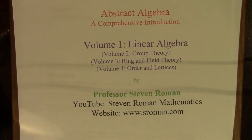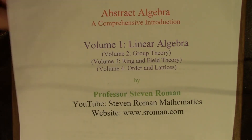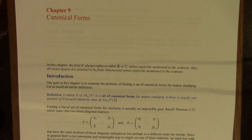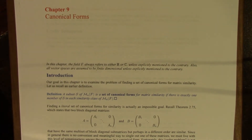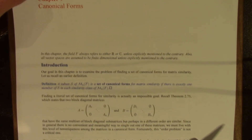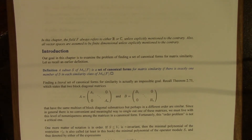Hello, this is Professor Roman. Let's continue the lecture series on linear algebra. We've come now to Chapter 9 on Canonical Forms. In this chapter, as in the previous one, the base field F will be either the real field or the complex field, and all vector spaces will be assumed to be finite dimensional.